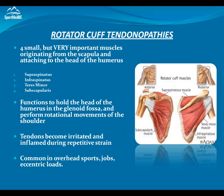We see rotator cuff issues really commonly in overhead sports, a lot of overhead jobs, and also with eccentric loads — that braking mechanism. We see this really commonly with volleyball players in their spiking motion, baseball players through throwing, football quarterbacks, and a lot of overhead racket sports. This rapid movement of throwing or swinging something overhead means the posterior muscles of the rotator cuff have to basically pull our shoulder back, creating an eccentric force to keep the arm from accelerating any further.